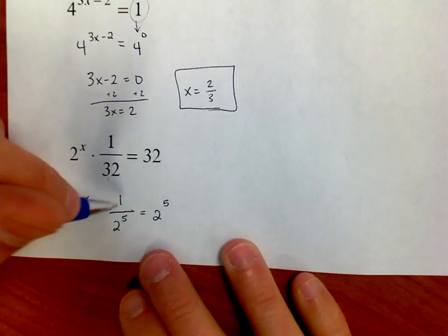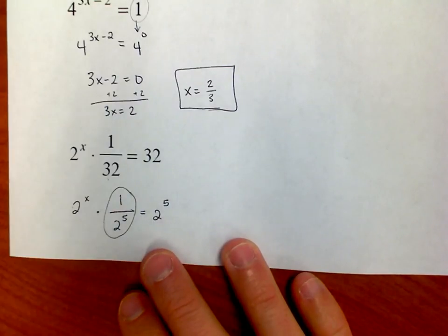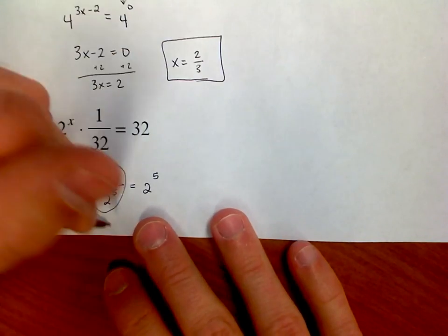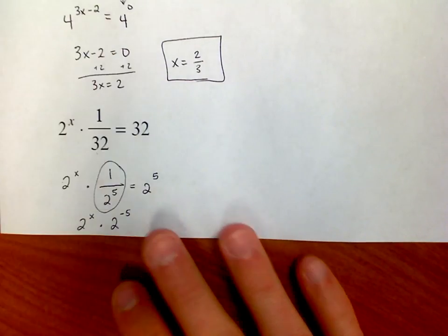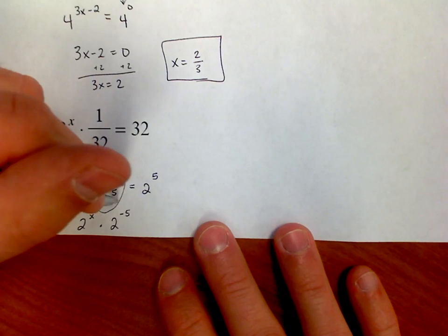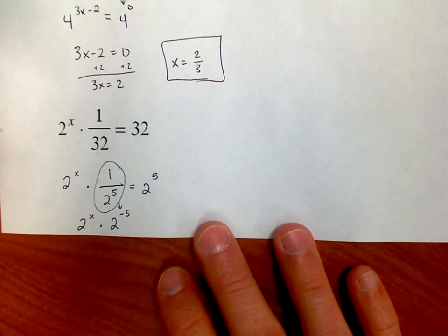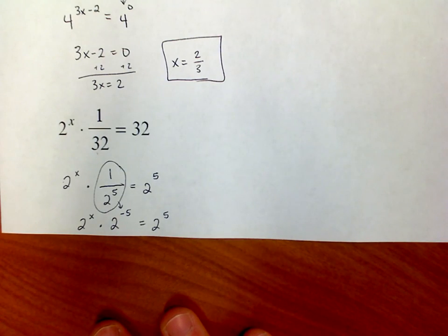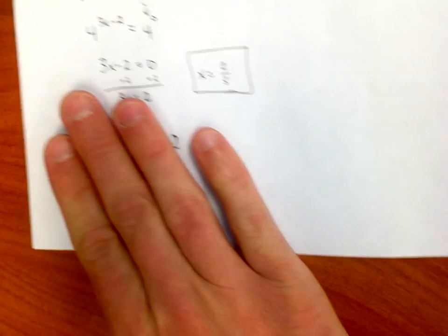Next step. See this thing right here? If I'm good with my rules of exponents, I understand that that could be written as, instead of 2 to the positive 5th on the bottom, I can write it as 2 to the negative 5th on the top. So that piece just got replaced by 2 to the negative 5th is equal to 2 to the 5th. Next rule.